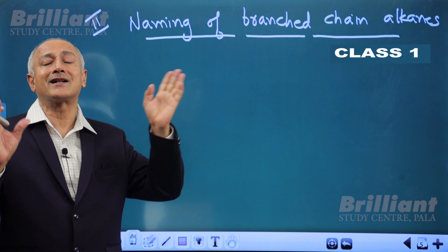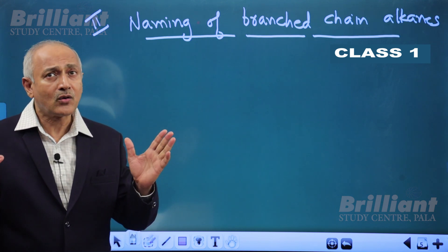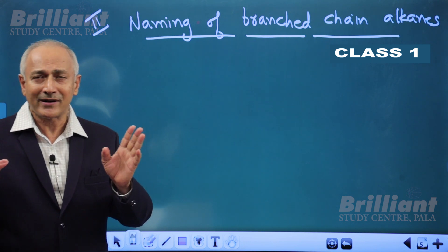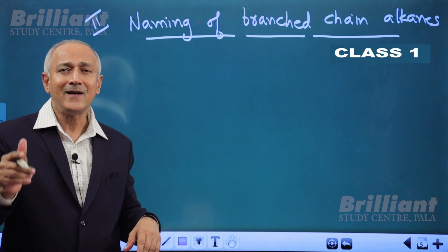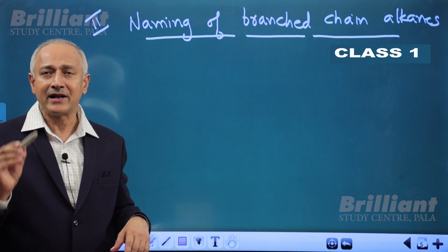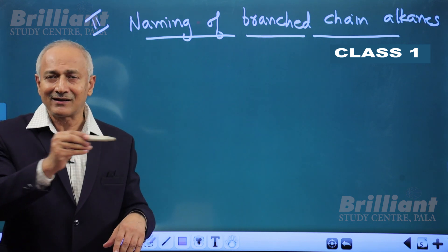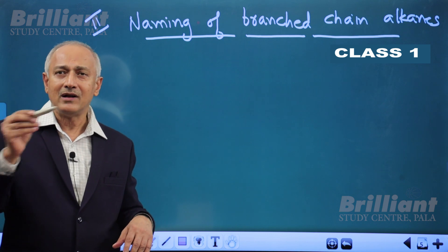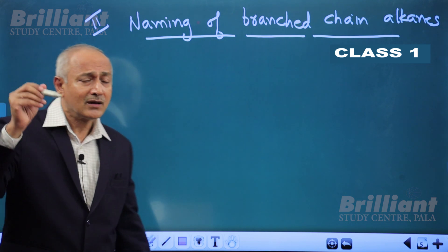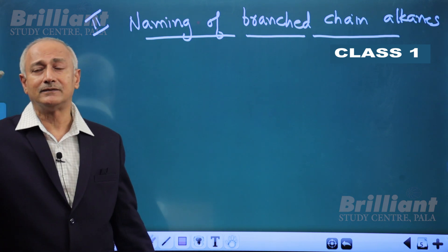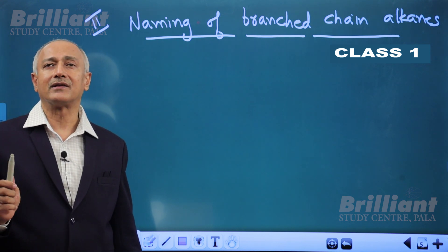When there is branching in the carbon chain, how will you name them in the IUPAC way? There are certain rules for that. IUPAC, or International Union of Pure and Applied Chemistry, suggested certain rules to name branched chain alkanes. These are saturated acyclic organic compounds whose carbon chain has branches.